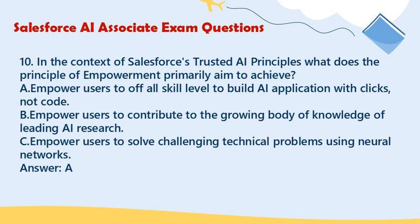Question 10: In the context of Salesforce's trusted AI principles, what does the principle of empowerment primarily aim to achieve? A. Empower users of all skill levels to build AI applications with clicks, not code. B. Empower users to contribute to the growing body of knowledge of leading AI research. C. Empower users to solve challenging technical problems using neural networks. Answer: A.